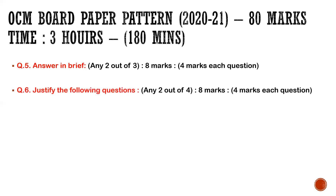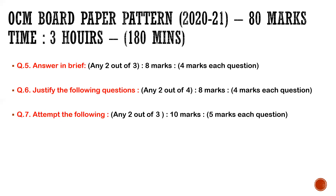Question number six — 'Justify the following' — any two out of four, eight marks, meaning each question is again four marks. This is a different question compared to SP, and here in OCM, question number seven replaces the letter writing that SP students have.